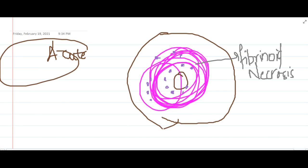There is transmural inflammation involving all the layers of the wall. This is the important thing about fibrinoid necrosis.